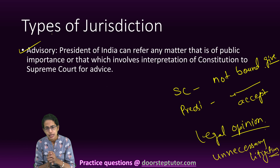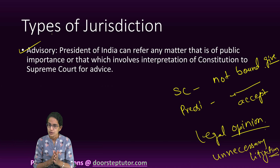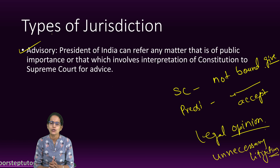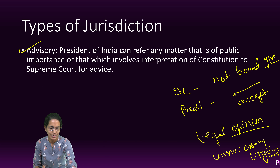So in this lecture, we have understood four types of jurisdictions of the Supreme Court. All four types are very important, and the further subtypes of writs have already been covered in a separate lecture. There will be many interesting lectures covering political science, so do not miss those. Wishing you very good luck for your preparation.